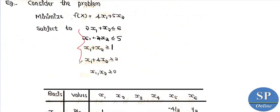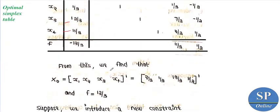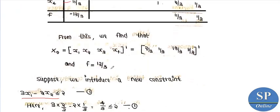Along with these constraints, we are going to introduce a new constraint and check the effect on the optimal solution. The new constraint is: 3x1 minus 2x2 less than or equal to 2. Checking with optimal values: 3 times 2/3 minus 2 times 1/3 equals 4/3, which is less than or equal to 2. So the optimal solution x0 satisfies the new constraint.